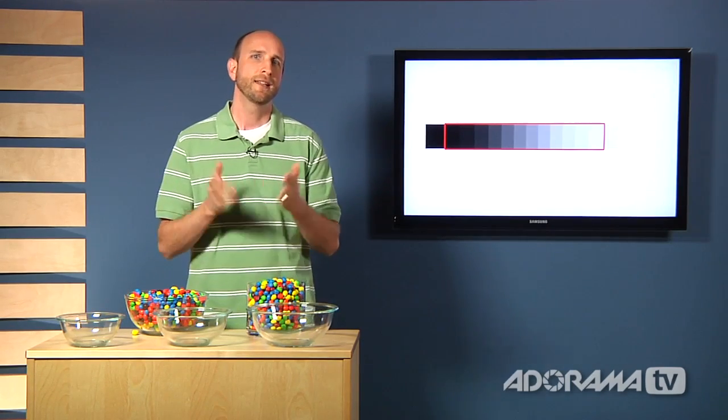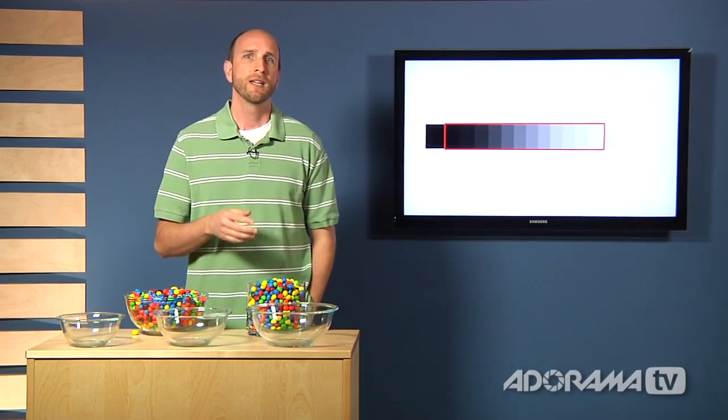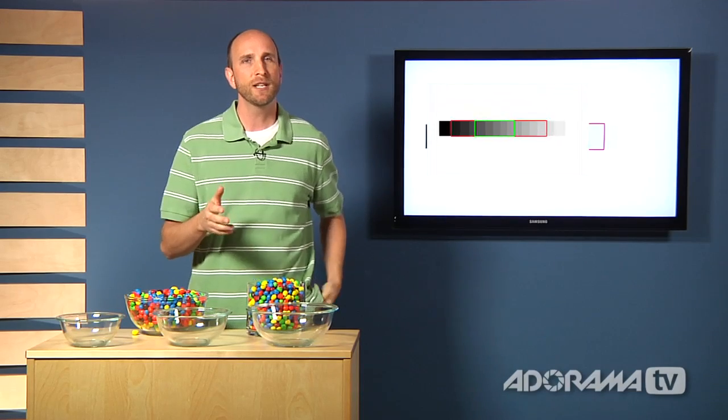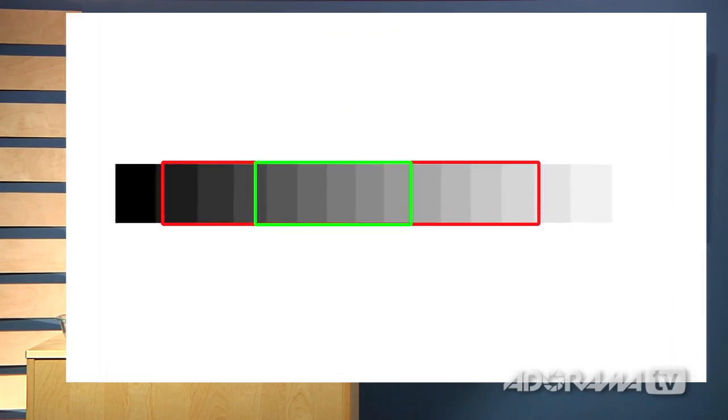In contrast, almost all other digital cameras only capture about five stops of light. And that is represented by this little green square. In fact, some cameras can't even capture five stops of light, so it's a very big difference. There's a huge difference between what we can see and what our cameras can capture.